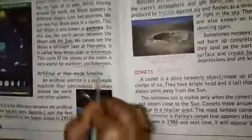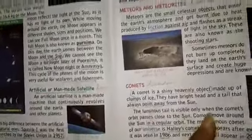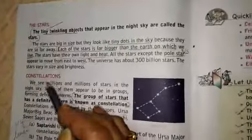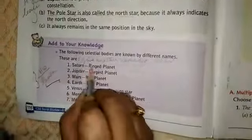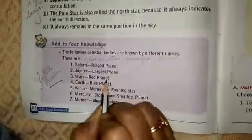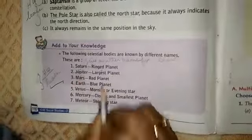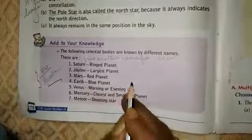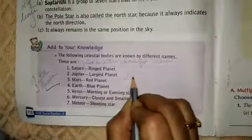Artificial or man-made satellites — you will be learning about those too. Read the lesson and learn about the stars and the constellation. Here, the following celestial bodies are known by different names — for example, Saturn is called the ringed planet and Jupiter is called the largest planet. So you will learn these alternate names also.